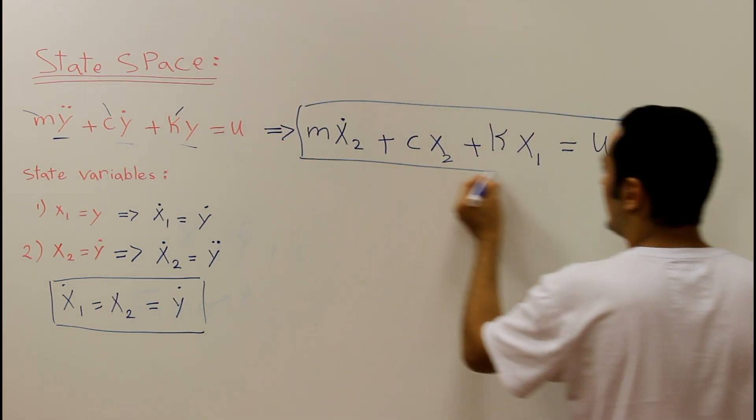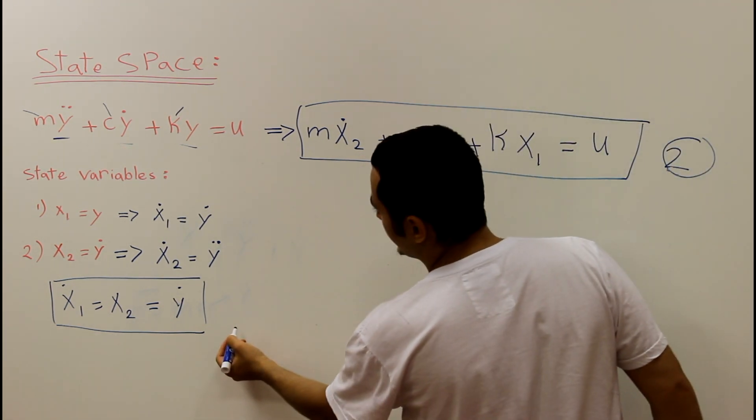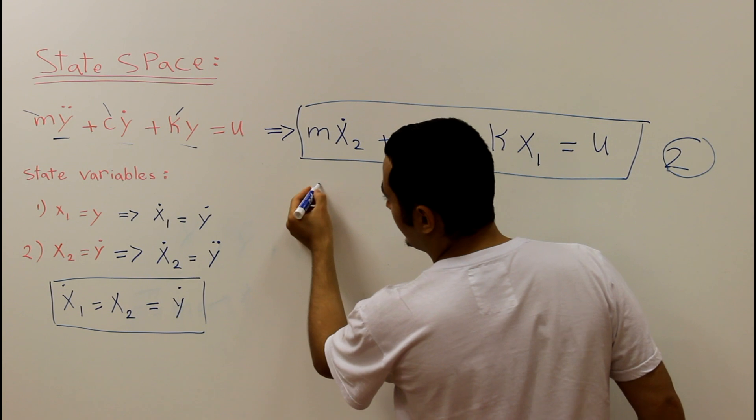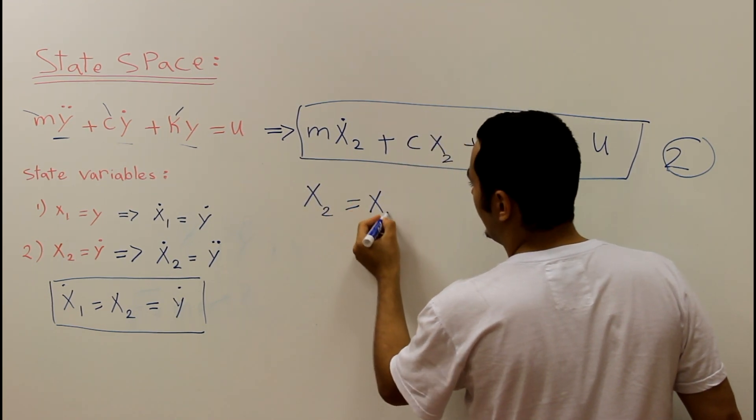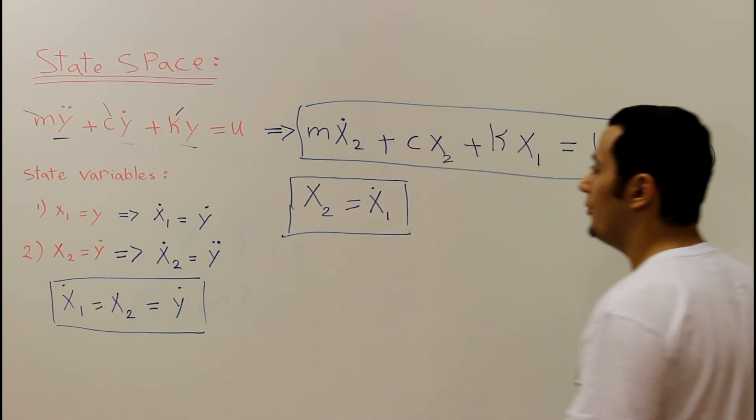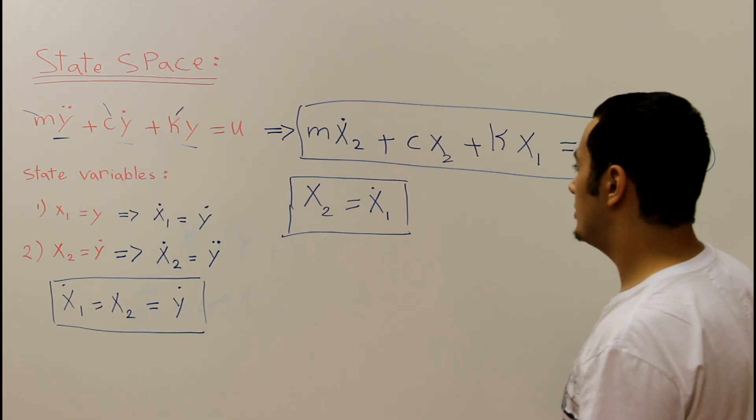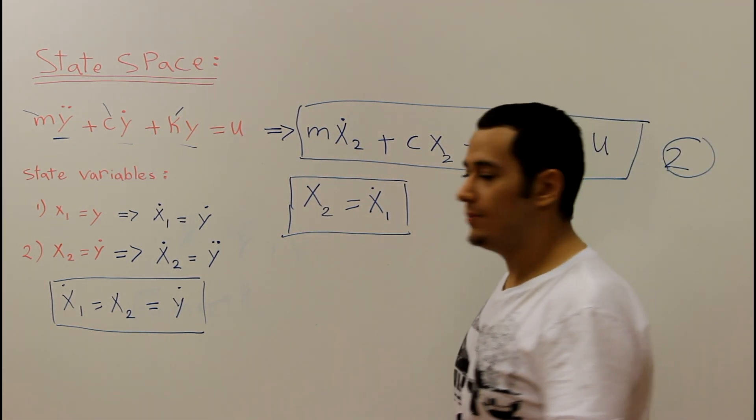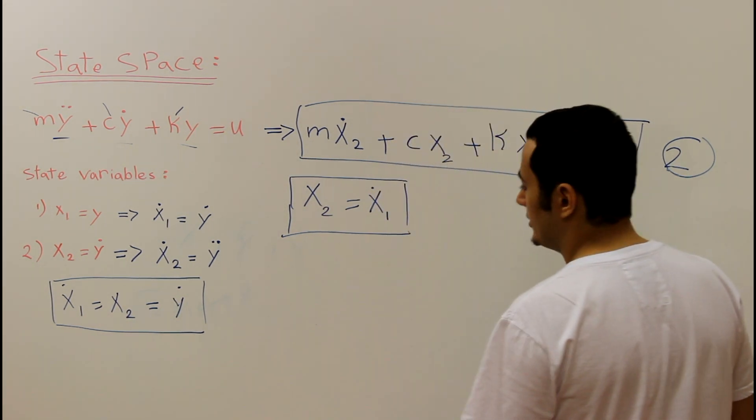This is our equation. This is the second equation. The first equation, which is in terms of x, is x2 equal x1 dot. So we have two equations. Right now, we need to write the state space representation. The state space representation will be in terms of matrices. So we'll go ahead and do that.